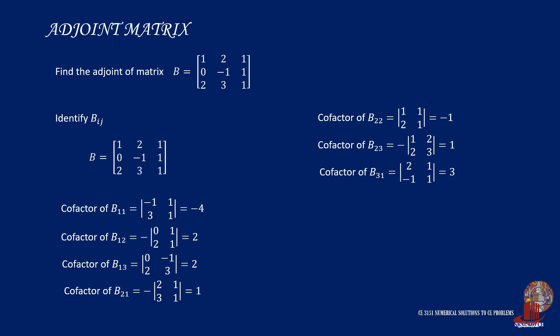Take the negative to solve cofactor of B32, and the remaining determinant will give negative 1.